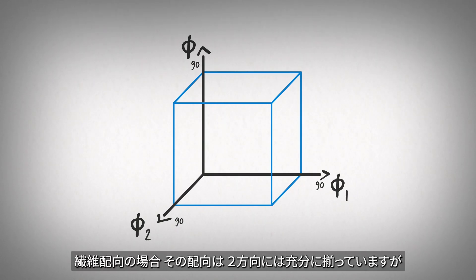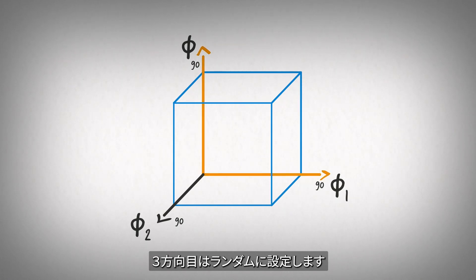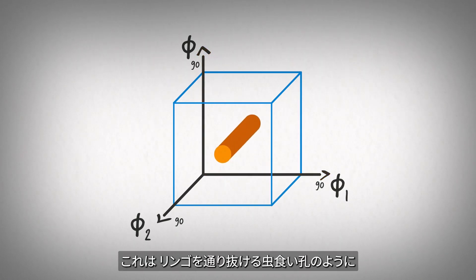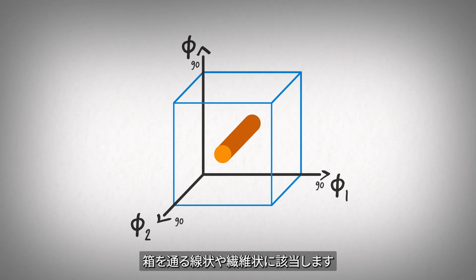In the case of a fiber orientation, we said the direction is well known in two directions, but random in the third. This would correspond to a line or fiber passing through the box, like a wormhole through an apple.